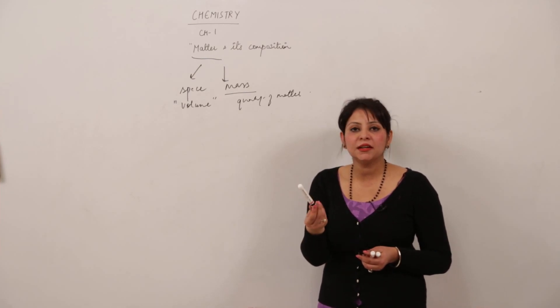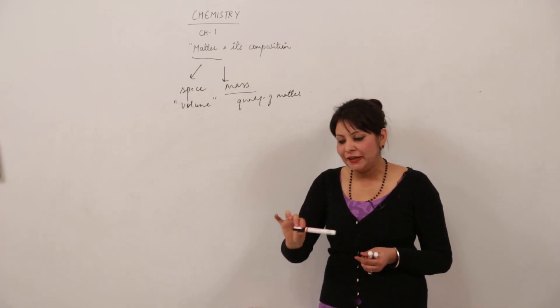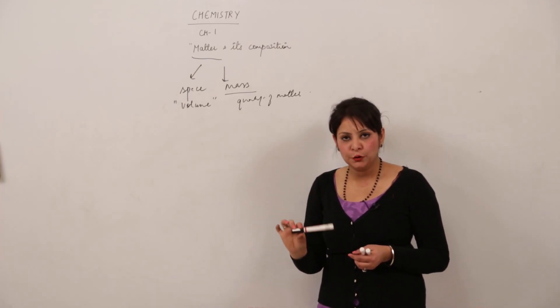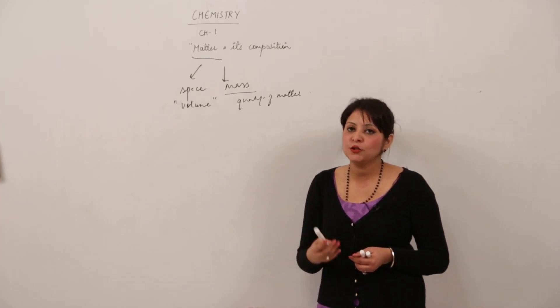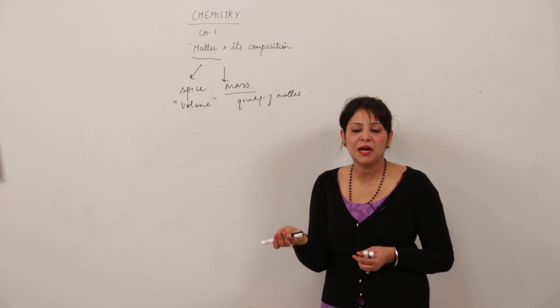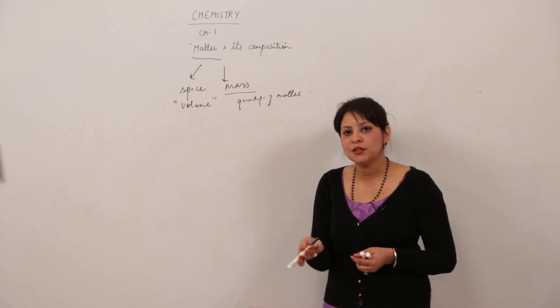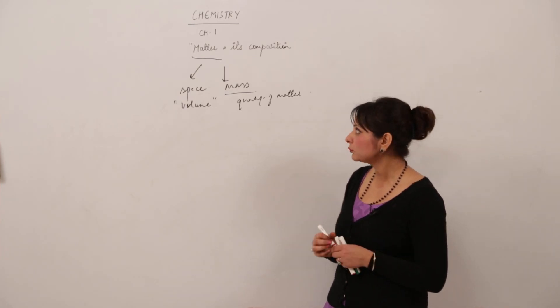For example, this marker — if I keep it, it will occupy space and it also has a certain mass, so it is also a form of matter.